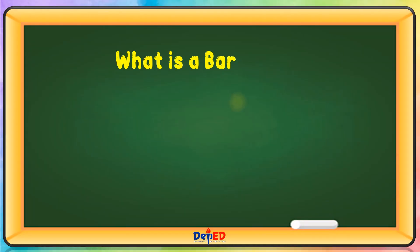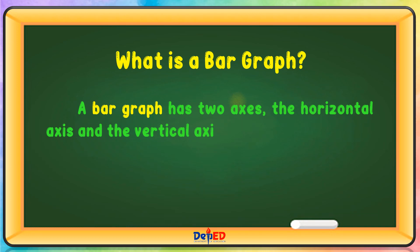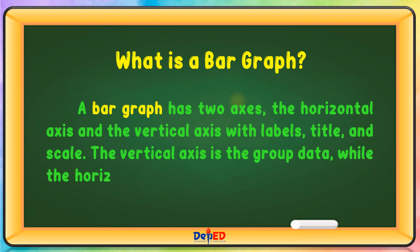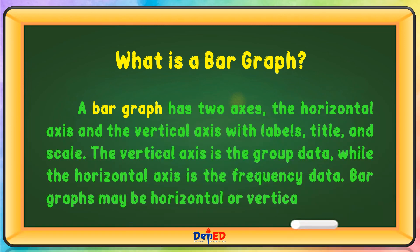What is a bar graph? A bar graph has two axes — the horizontal axis and the vertical axis — with labels, titles, and scale. The vertical axis is the group data, while the horizontal axis is the frequency data. Bar graphs may be horizontal or vertical.